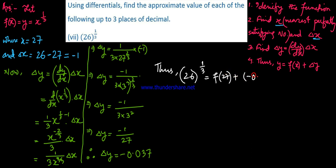Now, f of 27 plus delta y. The function is x to the power one by three, so f of 27 is 27 to the power one by three, plus minus 0.037.